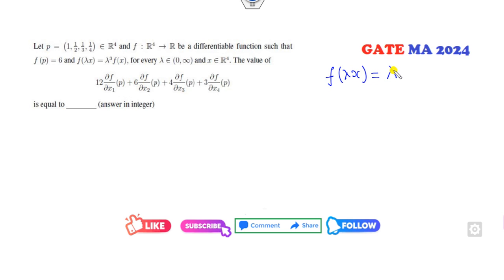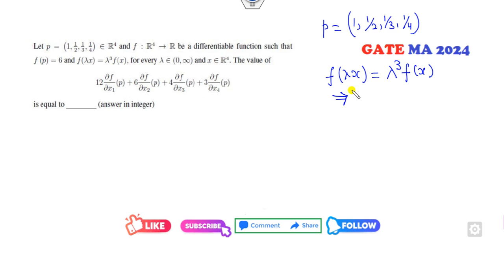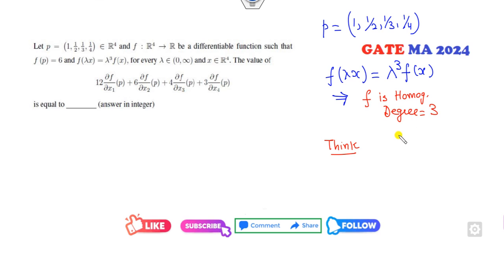Now for this next problem: P is any vector. What is the meaning of this? It means f is a homogeneous function with degree 3. Think about which concept comes to mind when the function is homogeneous and they are talking about a first-order partial differential equation. The first idea that should come to your mind is Euler's theorem.